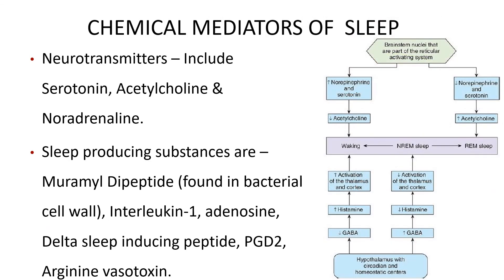Chemical mediators of sleep: neurotransmitters employed by neurons forming the neural substrate of sleep include serotonin, acetylcholine, and noradrenaline. Sleep-producing substances identified from experiments on sleep-deprived animals include muramyl dipeptide (found in bacterial cell walls), interleukin-1 (a cytokine that mediates the effects of muramyl dipeptides), adenosine, delta sleep-inducing peptide (isolated from the blood of sleeping rabbits), prostaglandin D2, and arginine vasotocin.